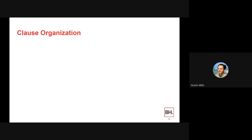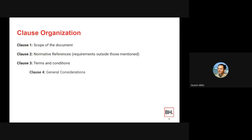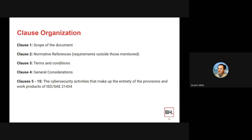Now that you know what provisions and work products are, let's see where to find them. Clauses 1, 2, 3, and 4 are basic information: clause 1 is the scope of the document, clause 2 is normative references listing requirements outside the standard, clause 3 is terms and definitions, and clause 4 is general considerations. Clauses 5 through 15 is where you will find all the provisions and work product requirements.